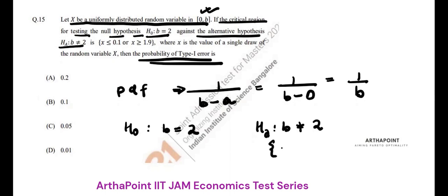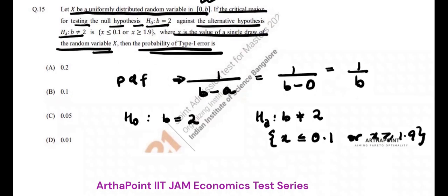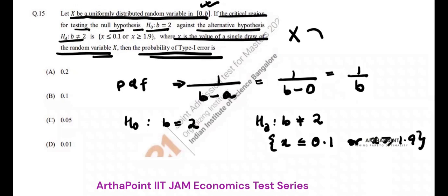B not equal to 2 has two forms: X less than or equal to 0.1 or X greater than or equal to 1.9. X is a value of single draw of random variable. This random variable whose probability density function is given by 1 by B is uniformly distributed.